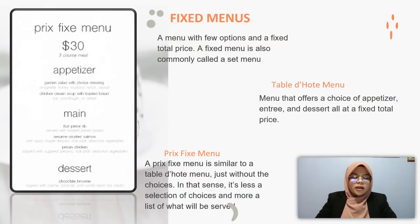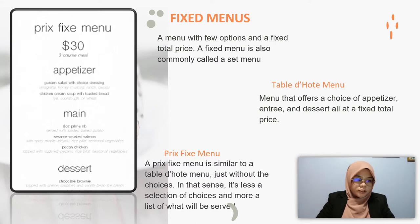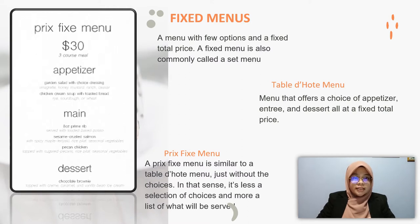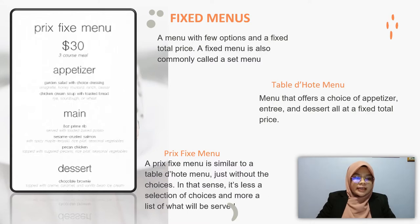Lastly, a fixed menu is also commonly called a set menu, and there are two common types: the table d'hôte menu and the pre-fixe menu. A common table d'hôte setup has a diner choosing one appetizer from two options, one entrée from two or three options, and one dessert from two options, and the total price doesn't change. A pre-fixe menu is similar to a table d'hôte menu just without the choice — it's less a selection and more a list of what will be served. Pre-fixe menus may seem rigid but are an excellent choice for chef-driven restaurants that want food items served as the kitchen intends.